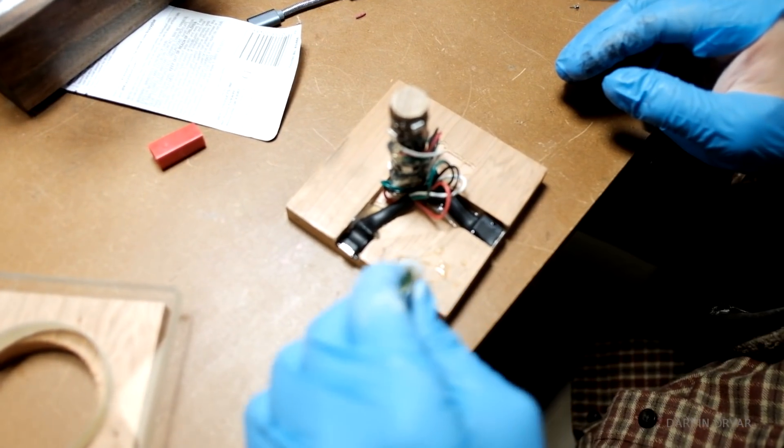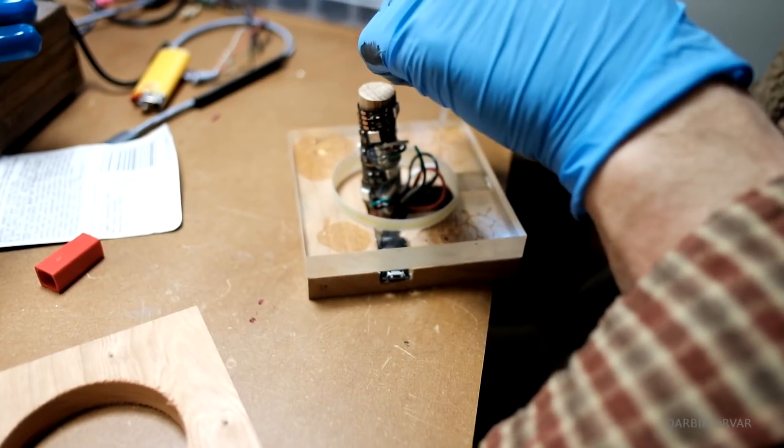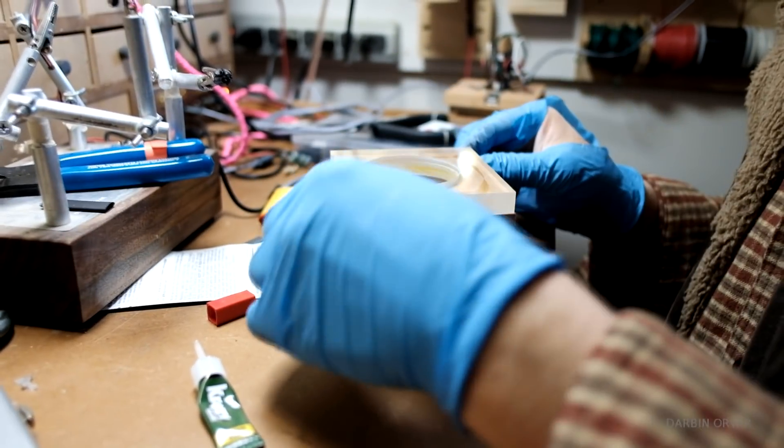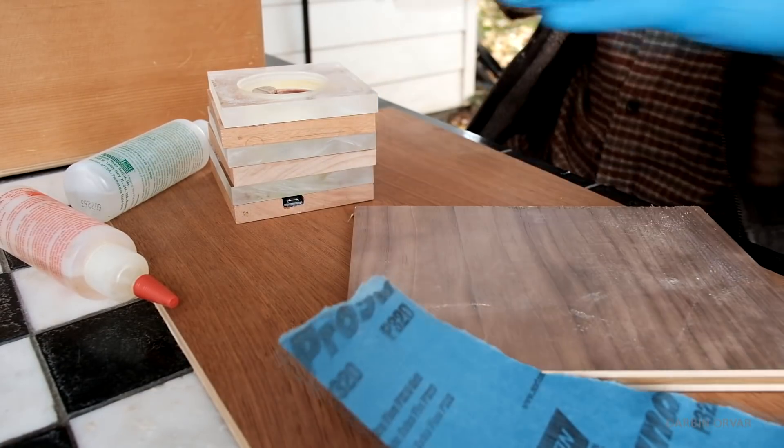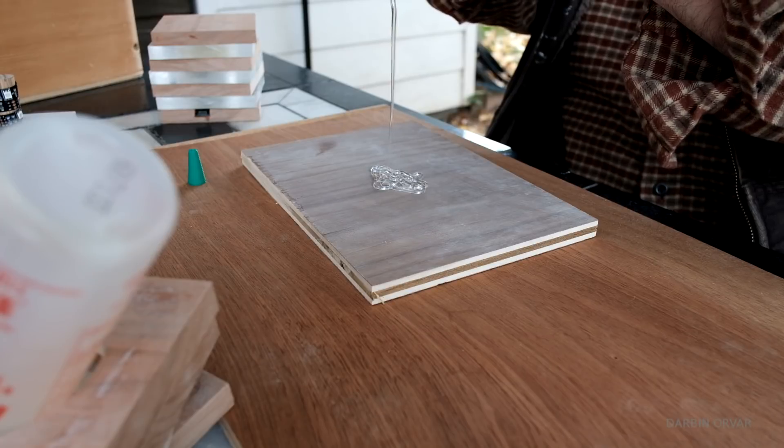So to glue the wood and the acrylic together, we first used crazy glue, because you want a really tight fit, so crazy glue made sense. However, after letting it dry, it became clear that that was not a good idea, and the pieces just came apart. So next up, epoxy, which worked a lot better.